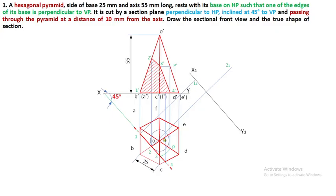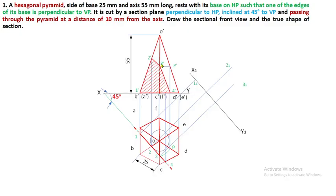From point 2, extend a perpendicular projector and measure the distance of 2 dash from XY. Transfer that distance on the X1Y1 reference, using X1Y1 as the reference point, and mark the same distance on the projector of 2. Similarly for point 3: measure the distance of 3 dash from XY, use X1Y1 as reference, and transfer the same distance on projector 3. For point 4, since 4 dash is exactly on XY, mark it at X1Y1 on the projector of 4.